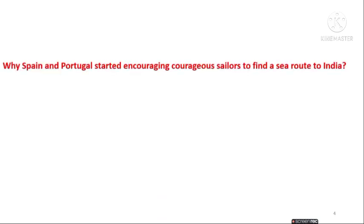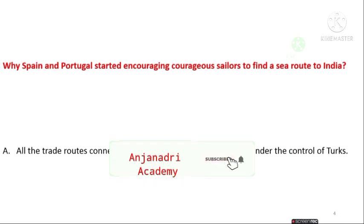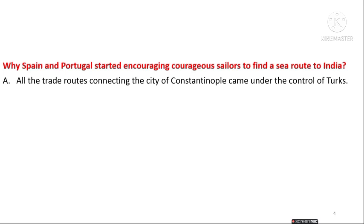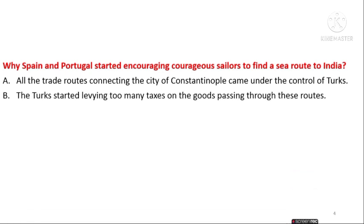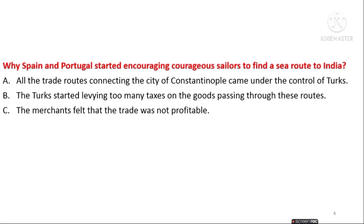The next question is: why did Spain and Portugal start encouraging sailors to find a sea route to India? Option A: all trade routes connecting Constantinople came under the control of Turks. Option B: the Turks started levying too many taxes on goods passing through these routes. Option C: merchants felt trade was not profitable. Option D: all of the above. The answer is all of the above — all these are correct reasons.